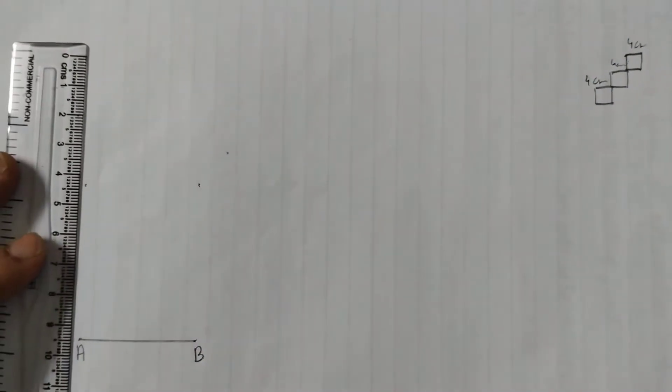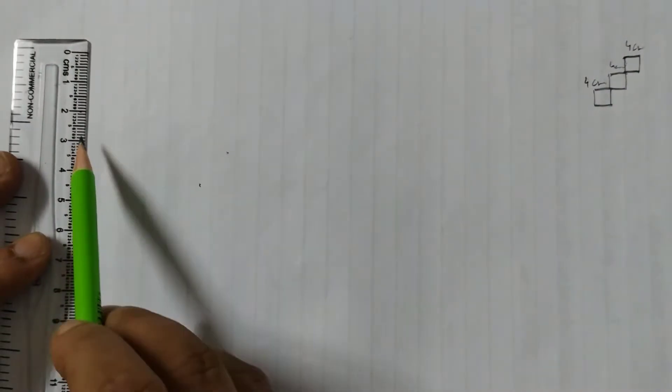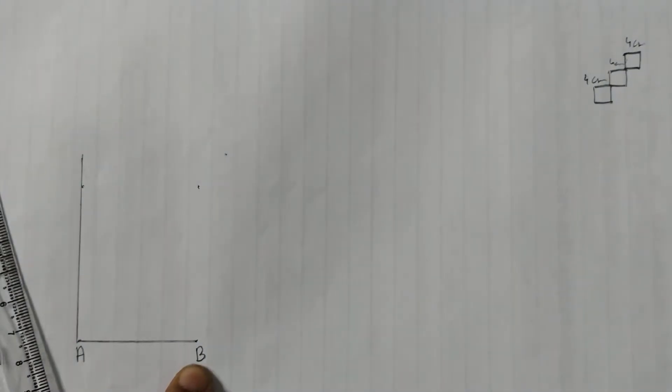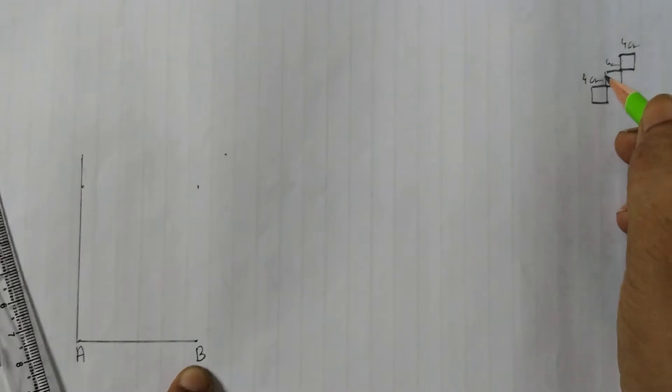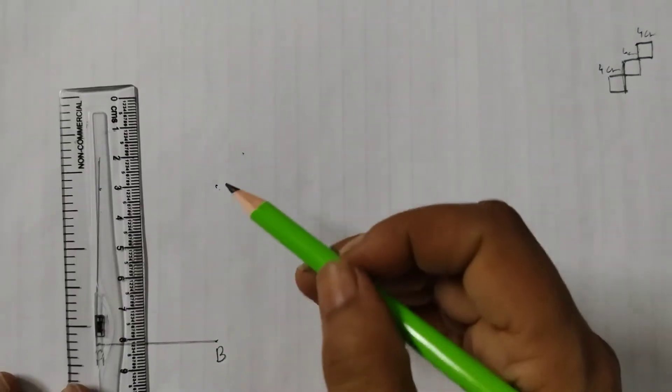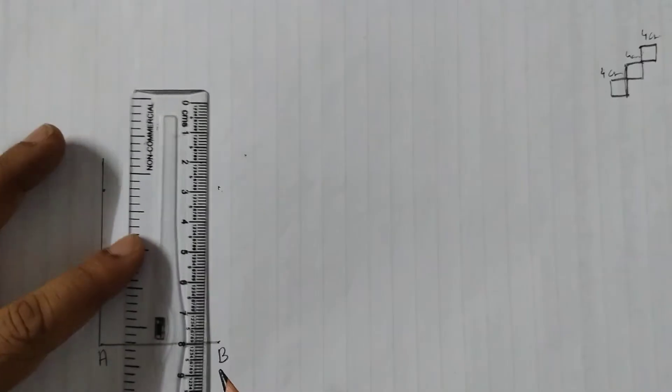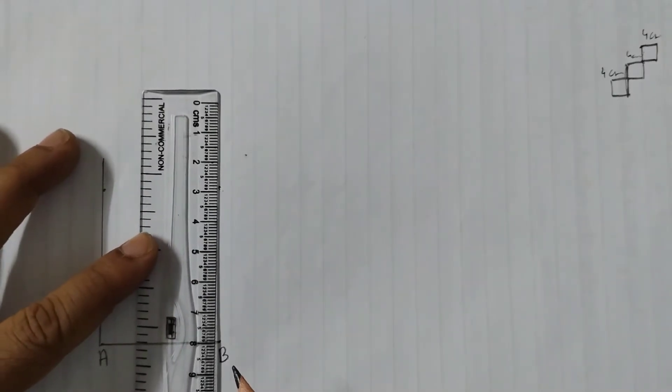Now join these two points. Now here, this side, if you see, we need to draw this full length. What I am going to do is I am going to join in such a way so that I get this length as well, I don't have to draw twice then. So now when I am joining it, I will just see where 8 is. This is 8, keep the point here at 8.